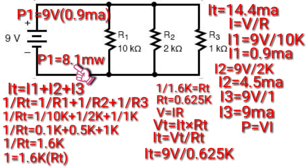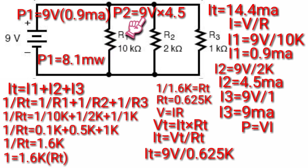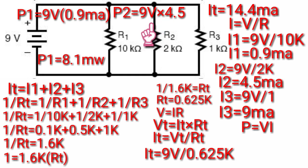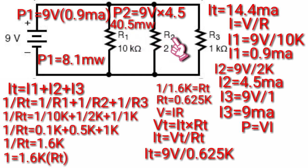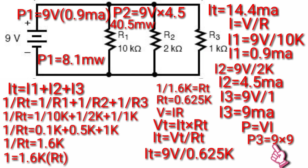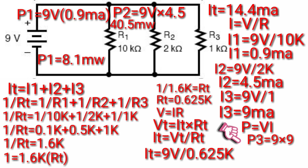P2 is equivalent to 9V times I2, 4.5mA, so P2 will be 40.5 milliwatts. Then P3 is equivalent to voltage 9V times I3, 9mA. Therefore P3 will be 81 milliwatts.